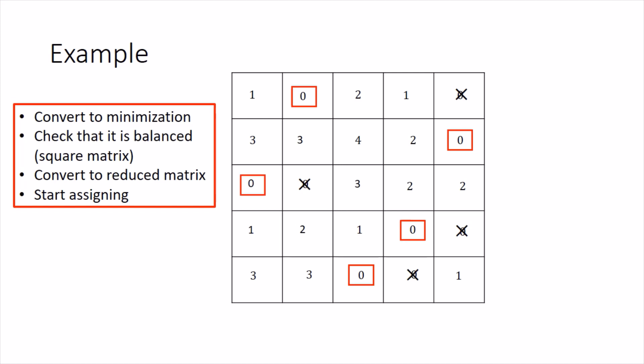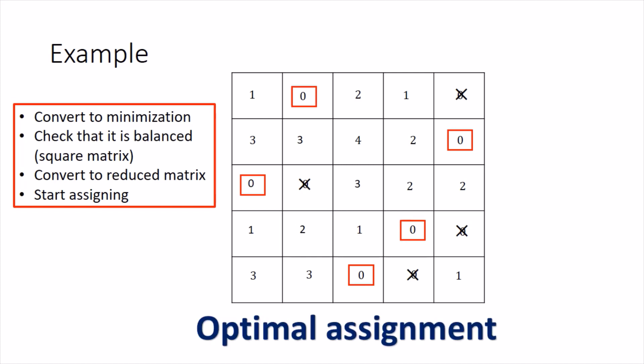All zeros are either crossed or boxed. Counting the boxes: the number of assignments made is 5, and the matrix size is also 5×5, so this is the optimal assignment. Now we just need to interpret the solution back in the original language of the problem — which person got which counter.